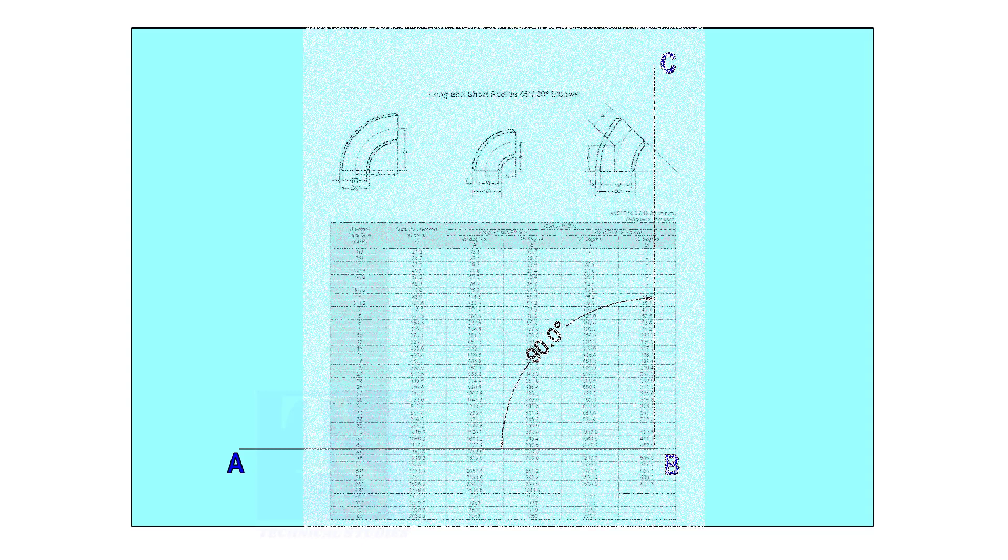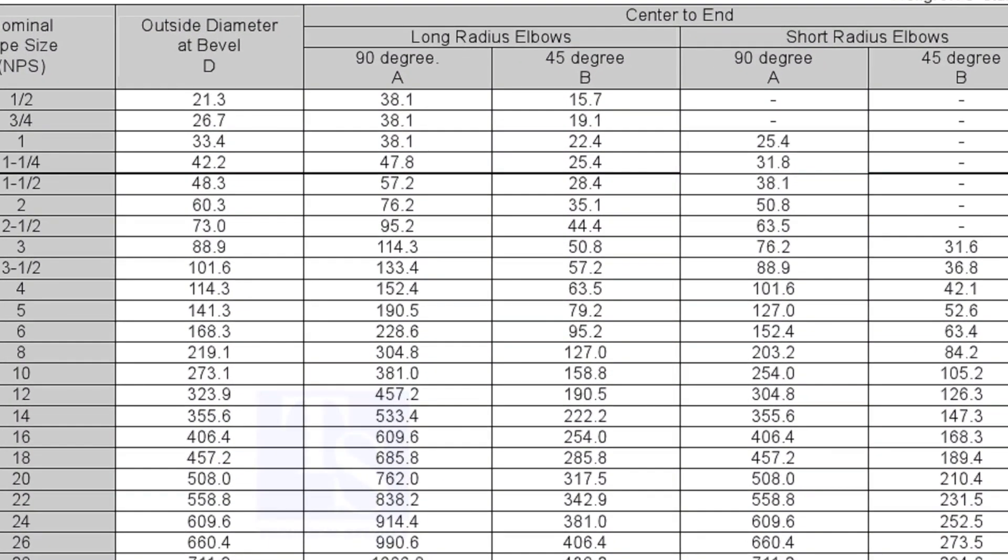Let us mark a 25-degree elbow on a 16-inch large radius elbow. Mark line AB and a perpendicular line BC. Let us check the center radius of 16-inch long radius elbow.